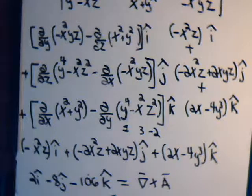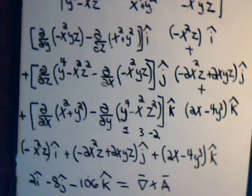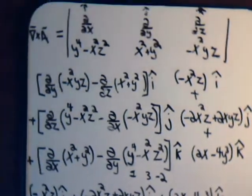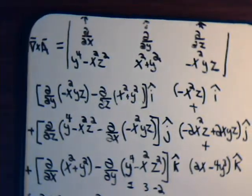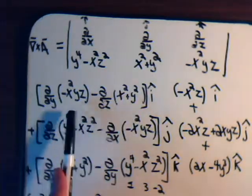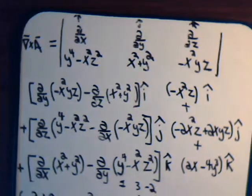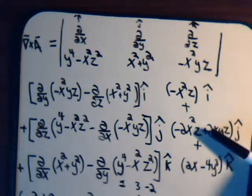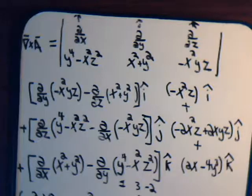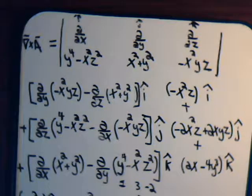That's all there is to it. The only difference when taking the curl of a vector versus a standard cross product is that we have to evaluate partial derivatives along the way to obtain expressions for the i, j, and k components. Other than that, finding the curl of a vector is exactly identical to taking a cross product.